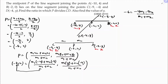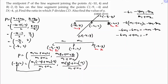Cross-multiplying: -6(m1 + m2) = -4·m1 - 9·m2. Expanding: -6·m1 - 6·m2 = -4·m1 - 9·m2. Rearranging: -6·m1 + 4·m1 = -9·m2 + 6·m2, giving -2·m1 = -3·m2. Therefore m1/m2 = 3/2, so the ratio is 3:2.